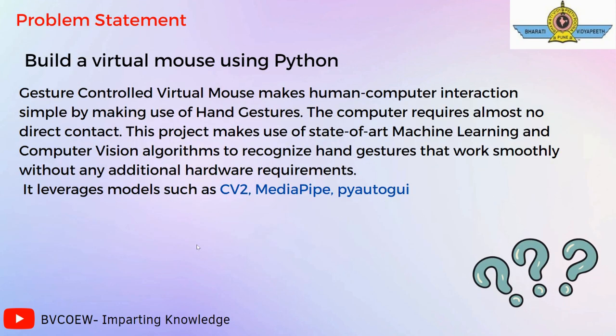The problem statement is to build a virtual mouse using Python. A gesture-controlled virtual mouse makes human-computer interaction simple by making use of hand gestures. The computer requires almost no direct contact. This project makes use of state-of-the-art machine learning and computer vision algorithms to recognize hand gestures that work smoothly without any additional hardware requirements. The three modules we are going to use are CV2, MediaPipe, and PyAutoGUI.